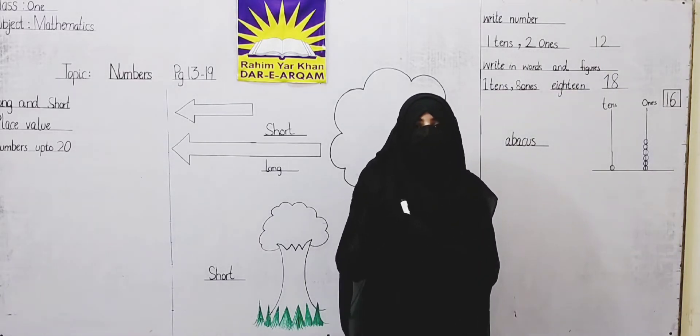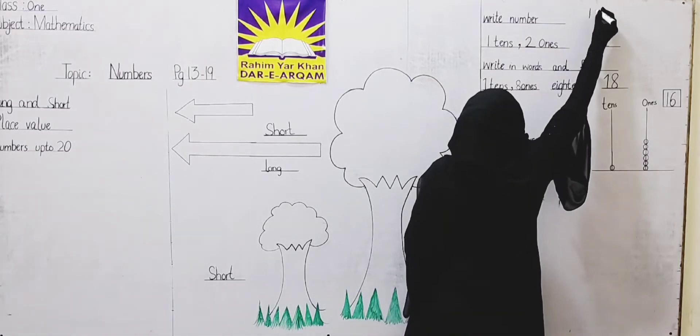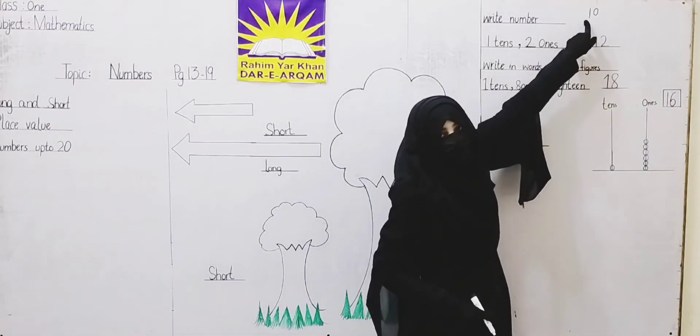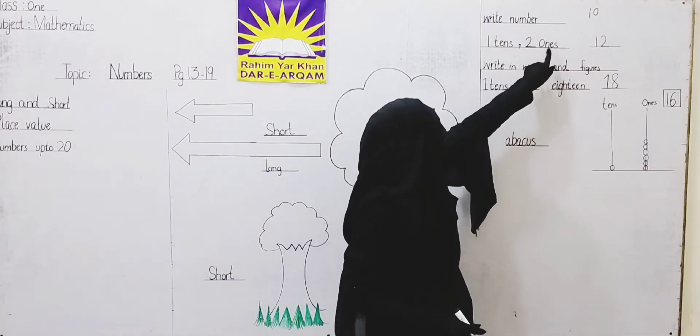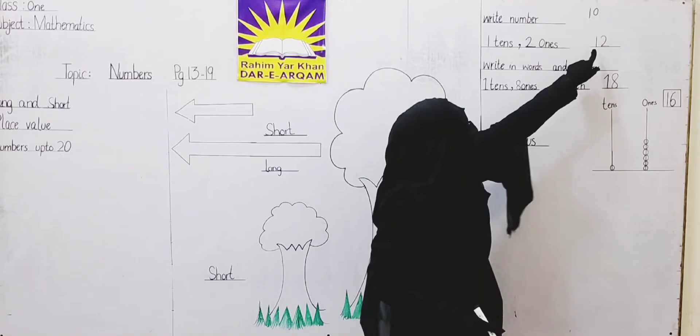One is in tens place. Ten. Eleven is one one and this is zero. Zero is in ones place and one is in tens place. One tens and two ones. So, we can see that ones place is two and tens is one.